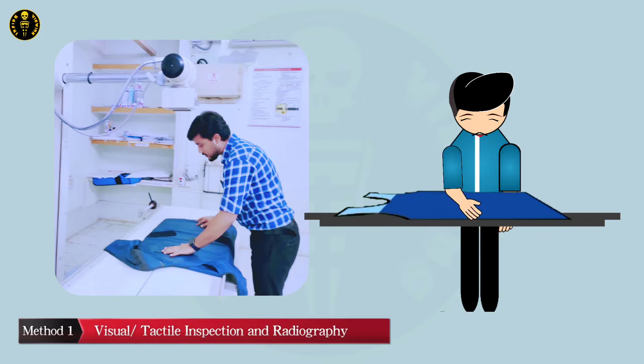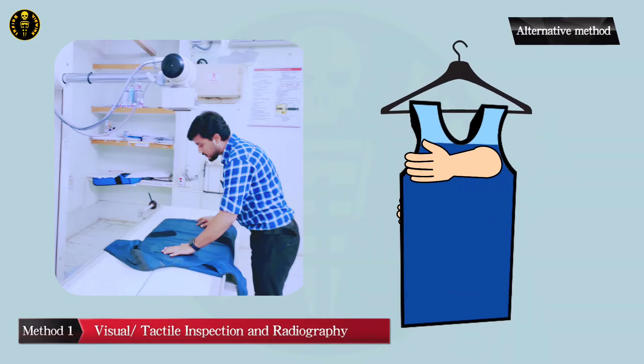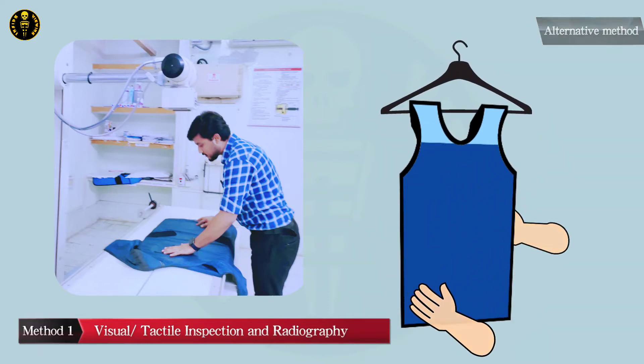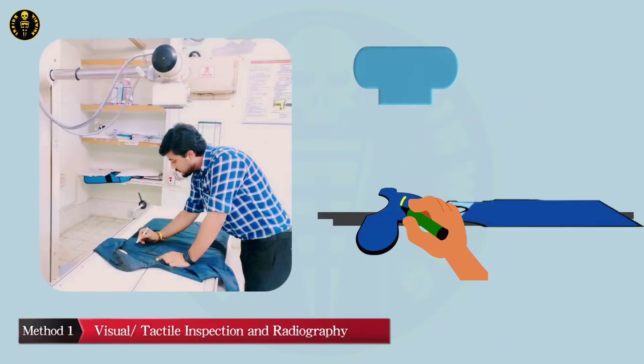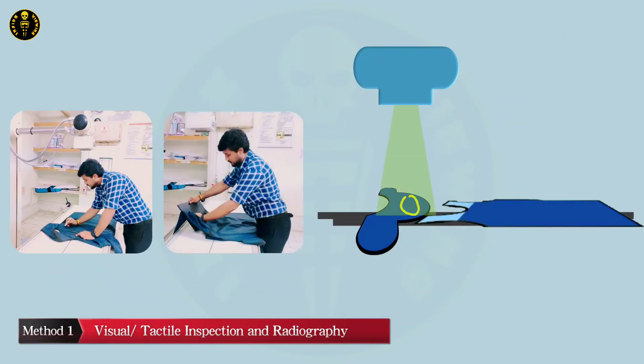For tactile inspection, run your hands over the entire inner and outer surface of the apron to find any thinning in the lead lining, any cracks or holes. Then mark the suspected area and take a radiograph.